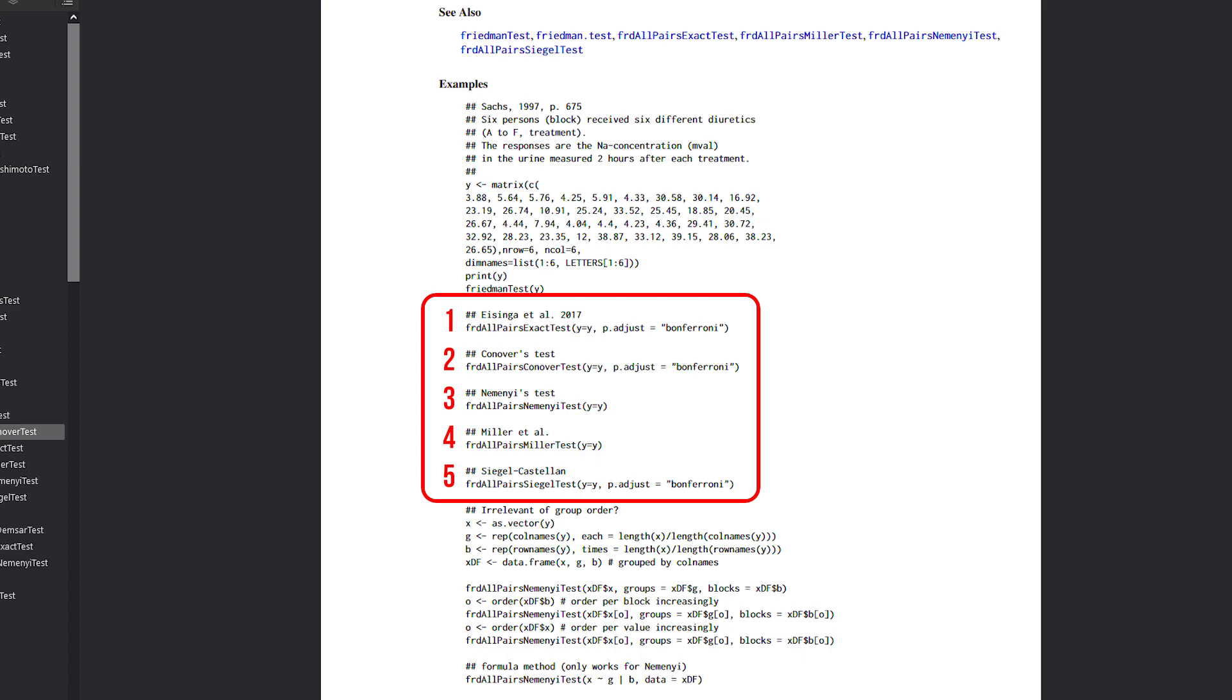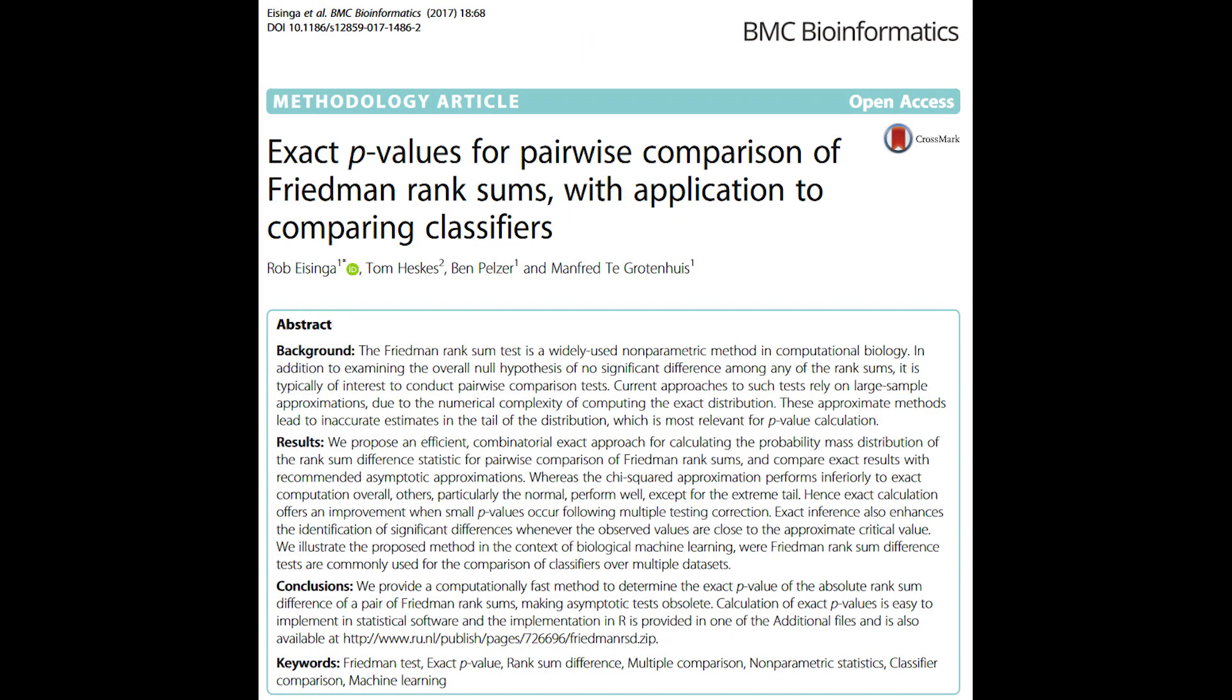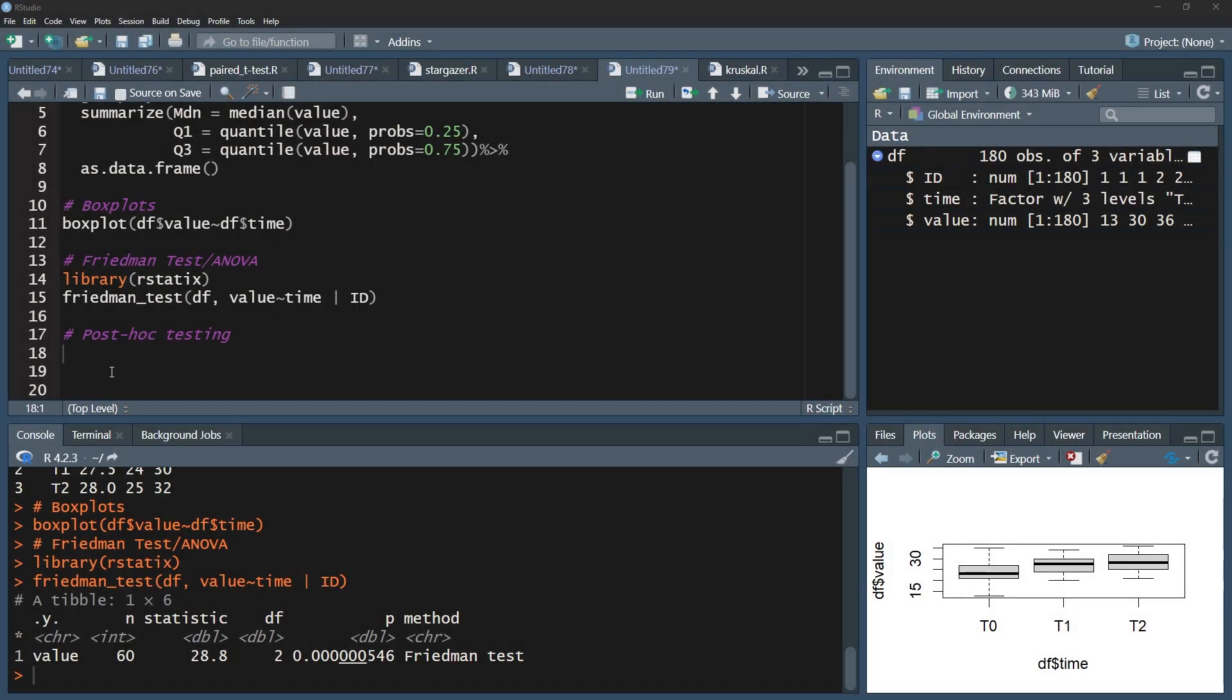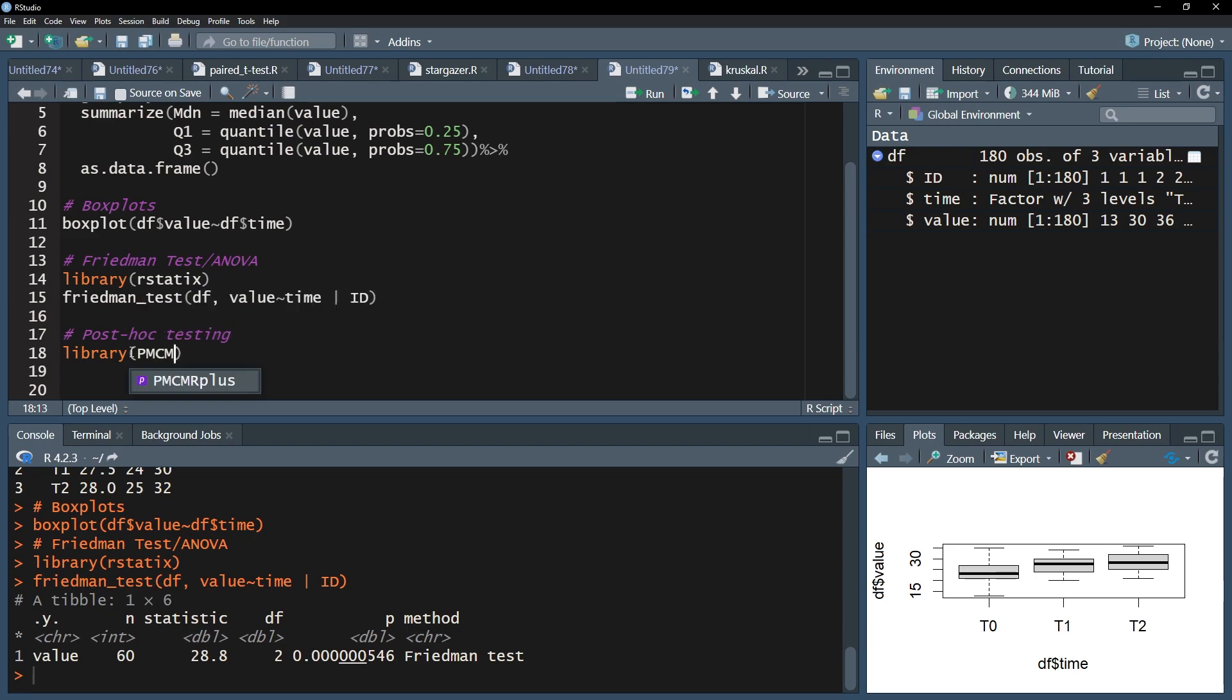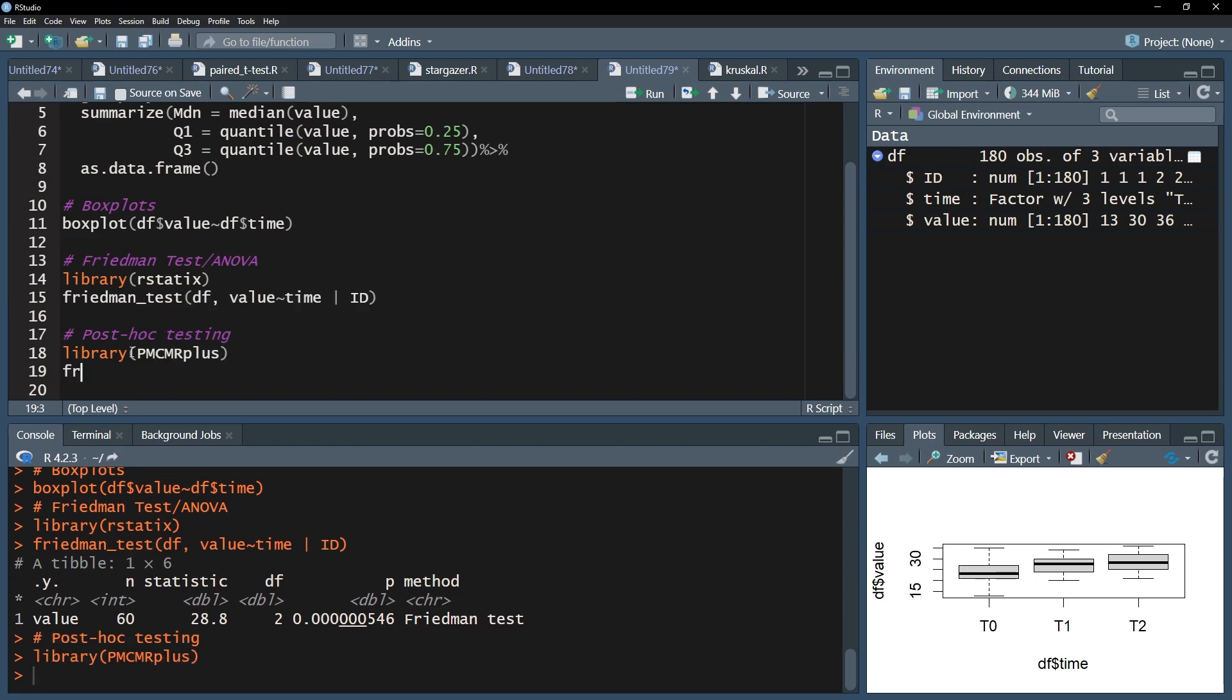Although I personally am leaning towards the exact p-value method provided by Isinga et al., mostly because of the reduced type 2 error probability. I'll therefore use the FriedmanAllPairsExactTest function of the pmcmrplus package. Start with installing and loading the pmcmrplus package.